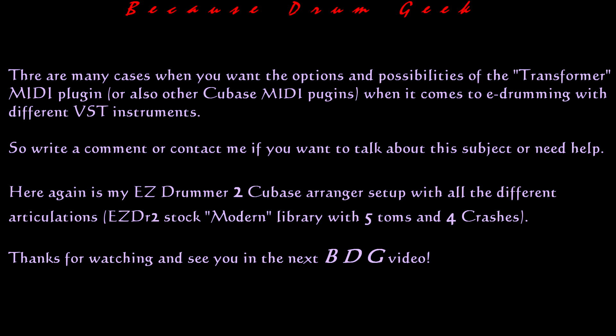So write a comment or contact me if you want to talk about this subject or need help. Here again is my EZ Drummer 2 Cubase Arranger setup with all the different articulations — EZ Drummer 2 stock modern library with 5 toms and 4 crashes.